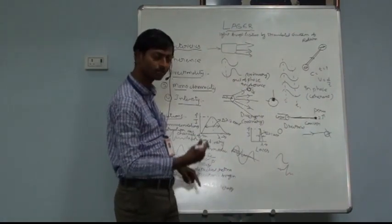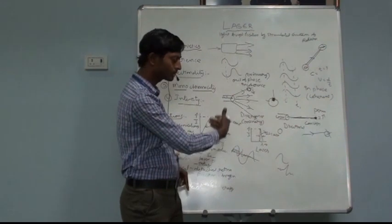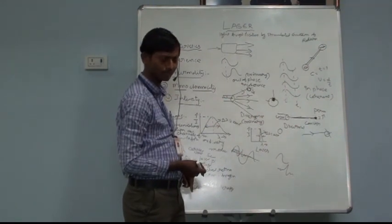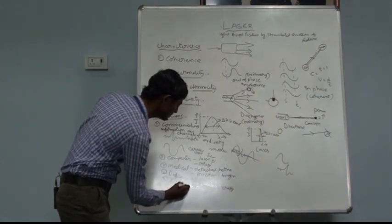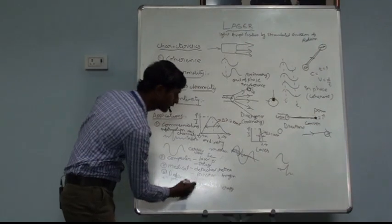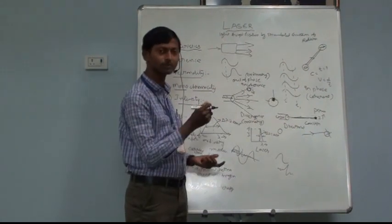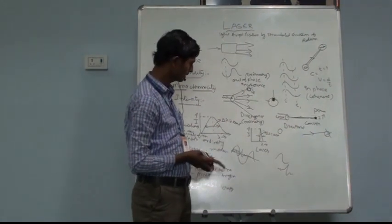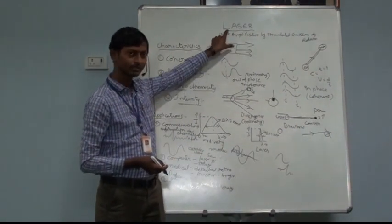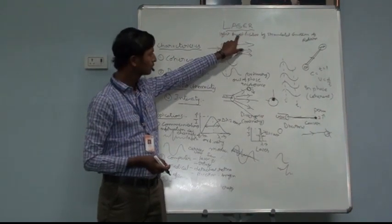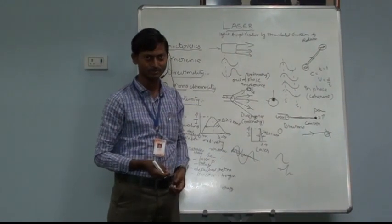From one application to another, the chemical composition, frequency, and various parameters change. In industrial applications, laser light is used to cut hard metals such as iron materials, as well as for welding purposes. These are some of the applications of laser light — we have discussed only a few basic concepts, some properties and applications due to time constraints.